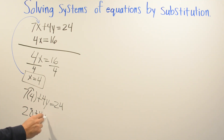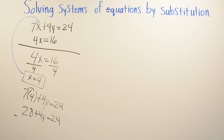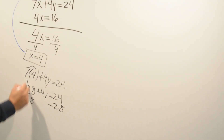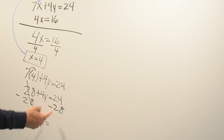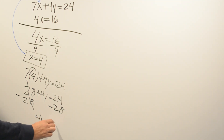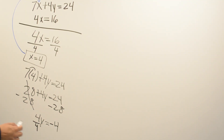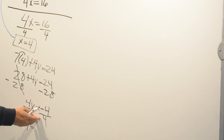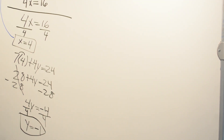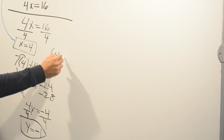This becomes a two-step equation. We subtract 28 from both sides — the opposite of positive 28 is negative 28 — so 4y equals negative 4. We divide both sides by 4: y equals negative 1. Our final answer is (4, negative 1).